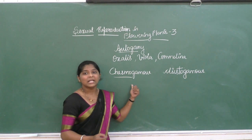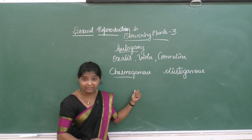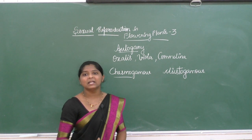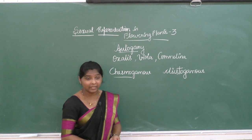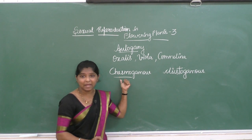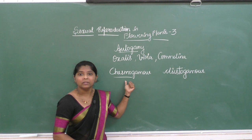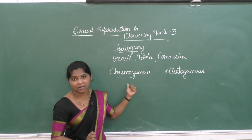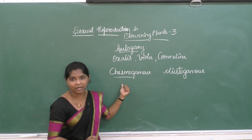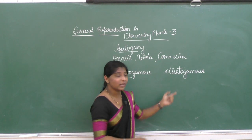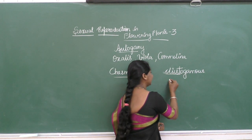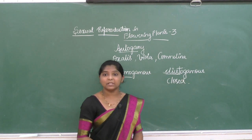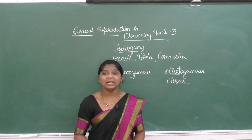Chasmogamous flowers are flowers like any other flowers we find around ourselves. Chasmogamous flowers are flowers with well-exposed anthers and stigma. I repeat: chasmogamous flowers have well-exposed anthers and well-exposed stigma.